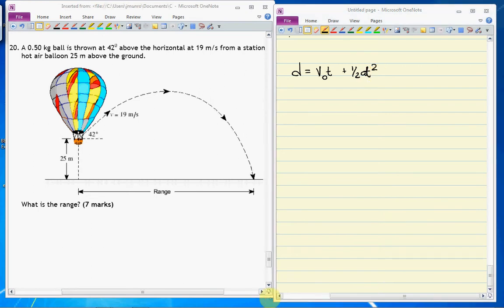In the case of trying to figure this out, we still need to work in the components. So let's do that at the same time. v₀y is equal to 19 times the sine of 42, which is 12.7 meters per second. And v₀x is equal to 19 cos 42, which is equal to 14.1 meters per second.